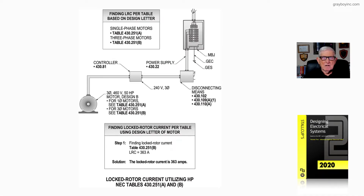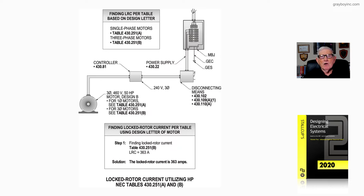This is the second procedure and method that designers and electricians may use to determine the size of the overcurrent device to allow a motor to start and run based upon its design letter, which could be design A, B, C, or D in most all cases. We're going to look at design letters B, C, or D.